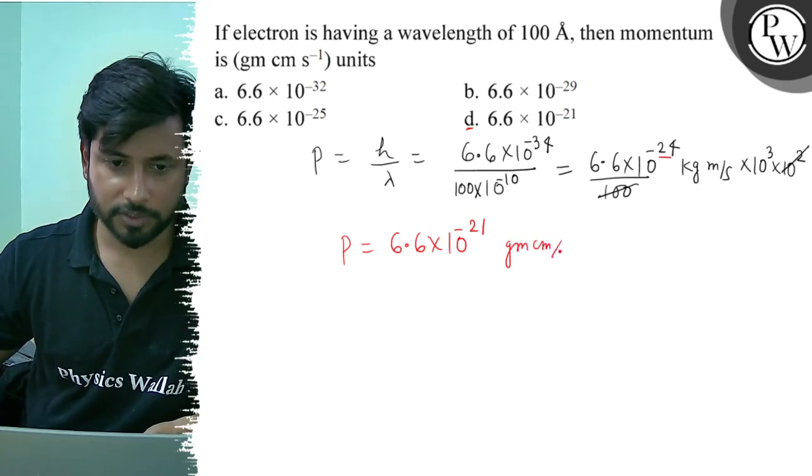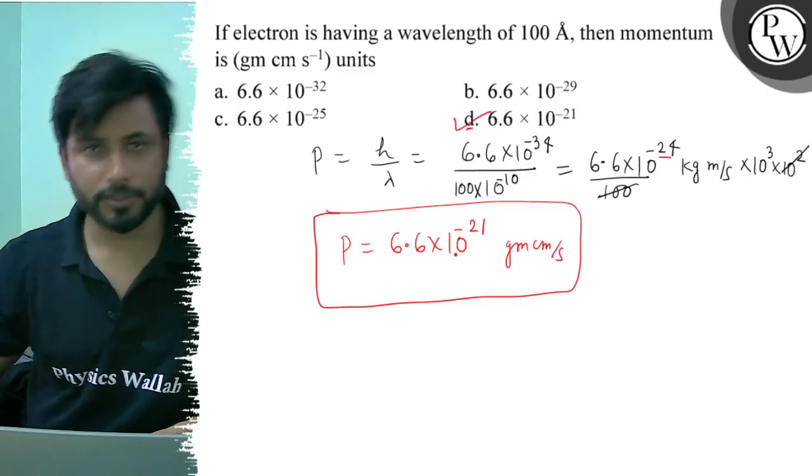Gram centimeter per second. So final answer is option D, best of luck.